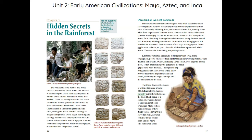The Maya developed a system of writing that used around 800 distinct glyphs. Scribes patiently painted symbols onto the folded bark paper of a codex, creating many of these ancient books, or codices. Many codices were destroyed or have disappeared. Hieroglyphics carved in stone, however, continue to tell stories from ancient Maya city-states even today.